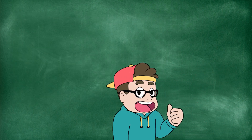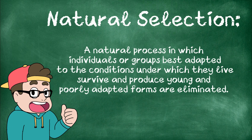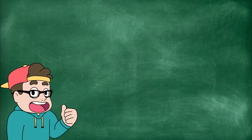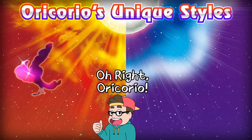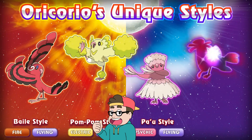Webster's Dictionary defines natural selection as a natural process in which individuals or groups best adapted to the conditions under which they live survive and produce young, and poorly adapted forms are eliminated. If you've ever heard the phrase "survival of the fittest," that's a layman's term definition of natural selection. The finches adapted over time for the food that was available to them, and thus distinguished themselves apart from their counterparts on different islands, and became their own species.